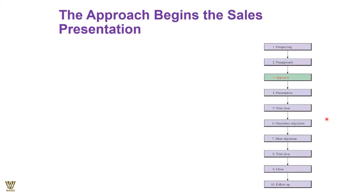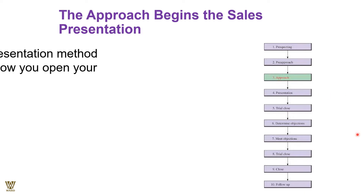How do we approach? We have discussed prospecting, pre-approaching, approaching, and presentations. A trial close will determine whether there are any objections. We then meet those objections, rectify the presentation, curtail services, or adjust the product, go for another trial close, and eventually close the deal. Once the deal is closed, we follow it up. We are talking about this in the context of customer analysis for sales planning.